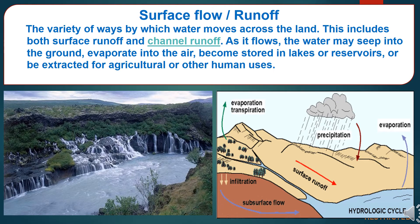The next component is surface flow or runoff. The variety of ways by which water moves across the land is called surface flow or runoff. This includes both surface runoff and channel runoff. As it flows, the water may seep into the ground, evaporate into the air, become stored in lakes or reservoirs, or be extracted for agriculture or human usage.